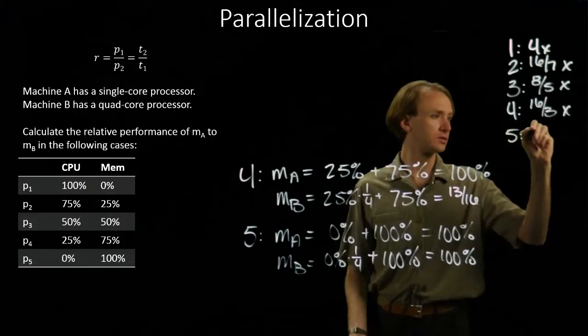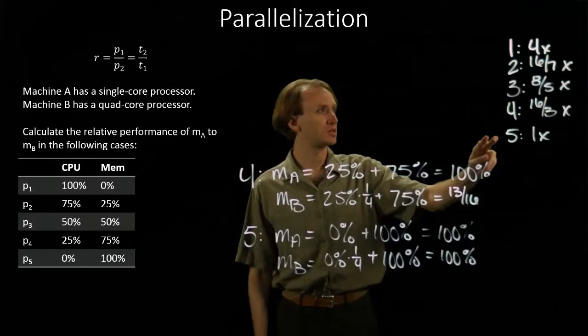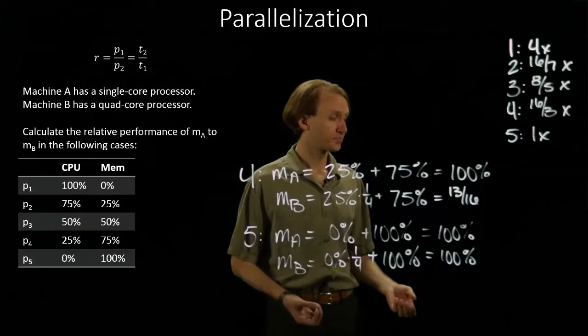As the CPU load of the program decreases, the benefit that we get from using Machine B decreases accordingly. We'll see some more with the next topic when we're looking at Amdahl's Law, where we start seeing limits to how much improvement we can get by just focusing on one part.